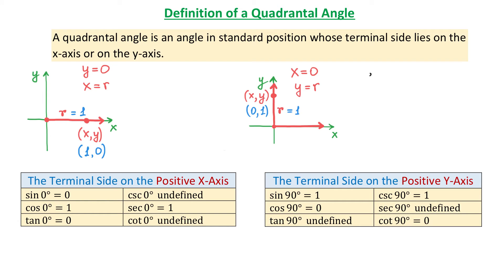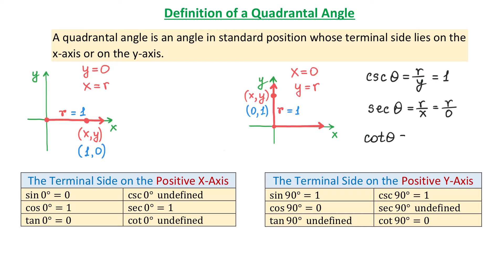Cosecant(θ) is r/y, and because r is the same as y, the value of cosecant is 1. Secant(θ) is r/x; because x is 0, r/0 is undefined. So cosecant of 90° is 1 and secant of 90° is undefined. Cotangent by definition is x/y; because x is 0, 0/y is 0. So cotangent of 90° is 0.